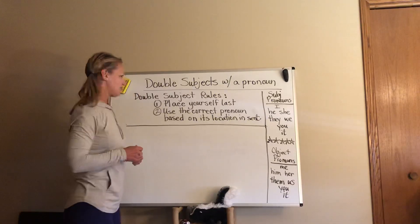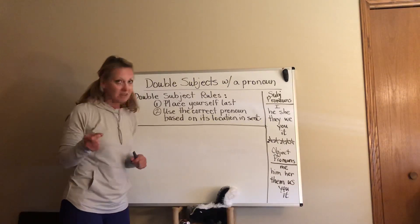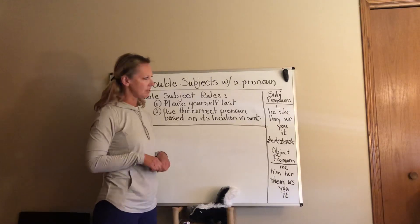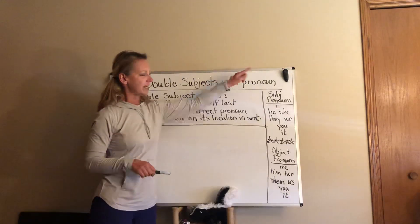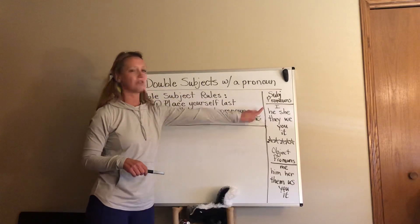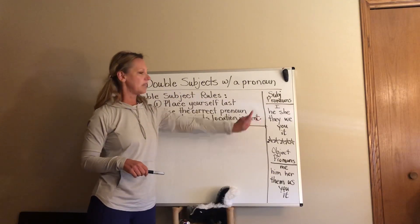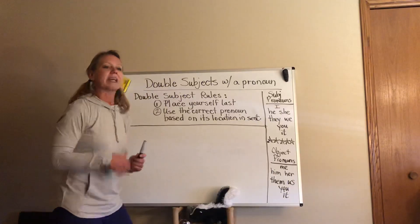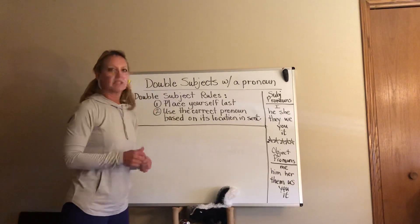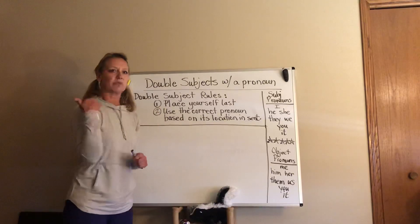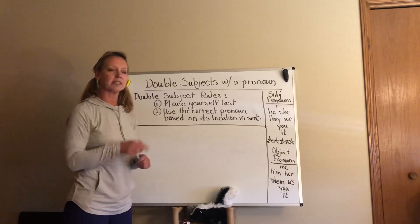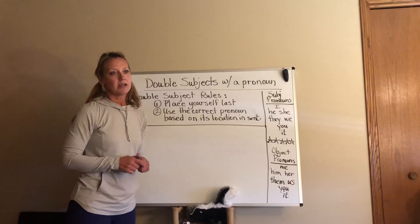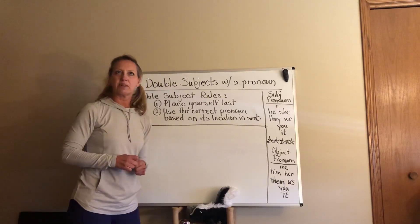After that, rule number two: make sure you're using the correct pronoun based on where that pronoun is located in your sentence. Remember, we go back to the rules from yesterday — if that pronoun is in the subject of the sentence, you have to choose one of those subject pronouns, and if it happens to be in the predicate of the sentence, you've got to choose one of the object pronouns.